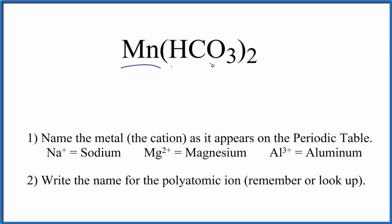To write the name for Mn(HCO₃)₂, we first need to recognize that manganese here is a transition metal, and then this HCO₃ is a polyatomic ion called the bicarbonate ion, sometimes called the hydrogen carbonate ion.